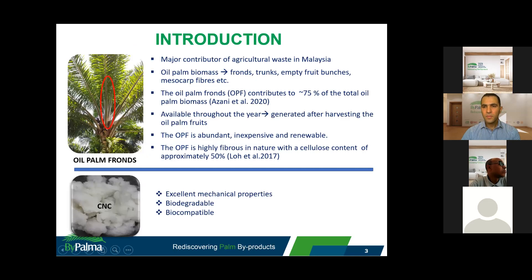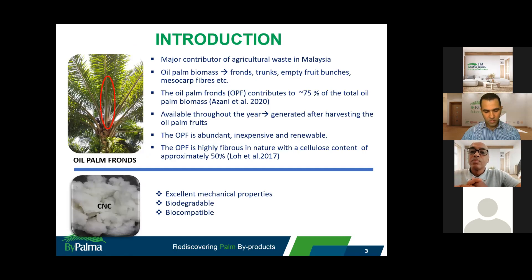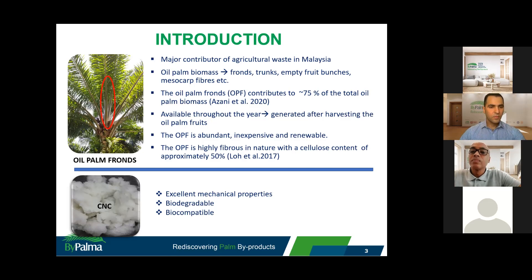Most of us in Malaysia are aware that Malaysia has the second largest oil palm plantation area in the world after Indonesia. This leads to oil palm biomass becoming the major contributor of agricultural waste in Malaysia. The oil palm biomass can be obtained in the forms of fronds, trunks, empty fruit bunches, mesocarp fibres, and et cetera. Oil palm fronds, or OPF, is chosen because it contributes to about 75% of the total oil palm biomass.